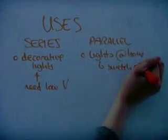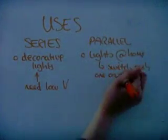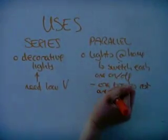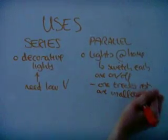Parallel circuits are used in the lights in the house. This means you can switch each one off or on separately, and if one bulb breaks, the rest will still be on.